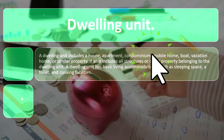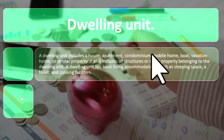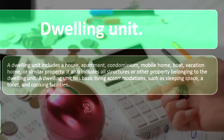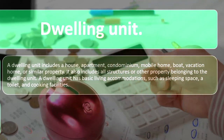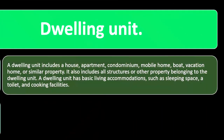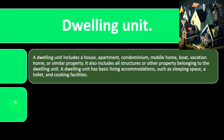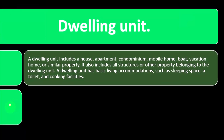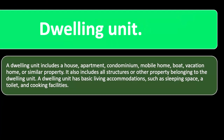A dwelling unit includes a house, apartment, condominium, mobile home, boat, vacation home, or similar property. It also includes all structures or other property belonging to the dwelling unit. A dwelling unit has basic living accommodations such as a sleeping space, a toilet, and cooking facilities. So it's pretty broad in spectrum — houses, boats, mobile homes — but you need to have the general living necessities: a toilet, cooking facilities, and living accommodations.